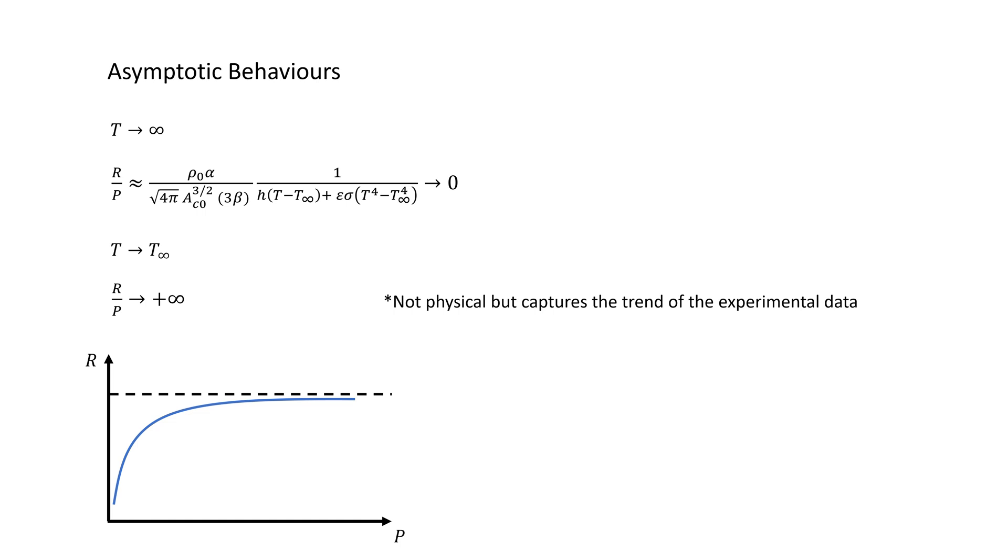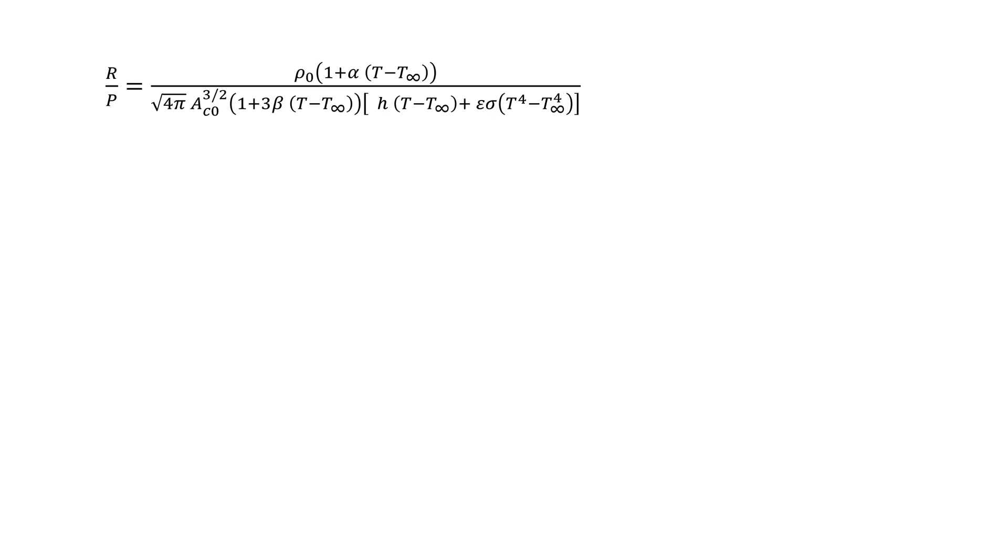This model is by no means perfect. One notable problem is that it does not account for the fact that the convection heat transfer coefficient is dependent on the Nusselt number. The Nusselt number is dependent on the Rayleigh number and the Prandtl number for free convection, and the Reynolds number and Prandtl number for forced convection.